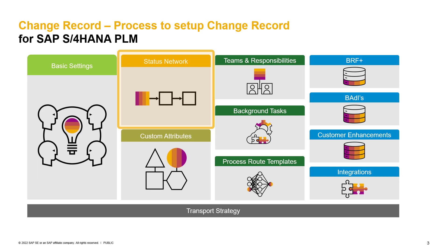Do you maybe want to have change masters not only on change record header level, but also on change item level? If you are planning to use the digital signature, you also need to define for which status change the digital signature is required. You should also be aware of the signature strategy — is a single signature enough, or is a multiple signature required for a status change?